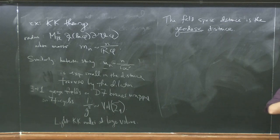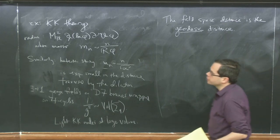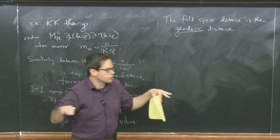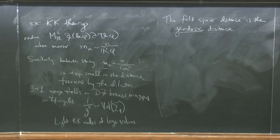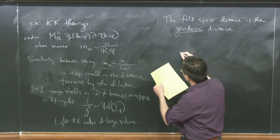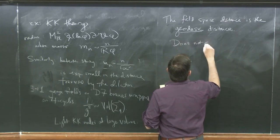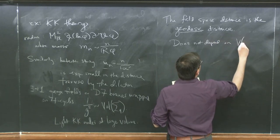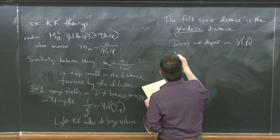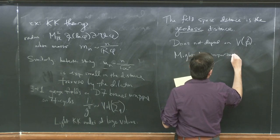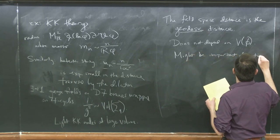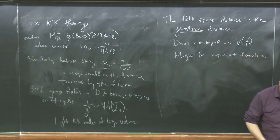But if I have fields that are actually evolving in time and we're not in this supersymmetric limit with a perfectly flat moduli space, the fields might not actually be following geodesics in field space because there could be a potential, and the potential could change how the fields are evolving. This might be an important distinction if we're trying to apply this to realistic theories of the real world that have SUSY breaking, where the potential can be very important for figuring out what the fields are doing.